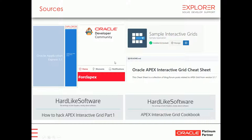Lots of these sources have been collected together and placed on an Interactive Grid cheat sheet — a link to GitHub with a readme file containing links to different blogs, snippets of code — a great source of information.